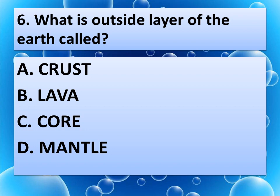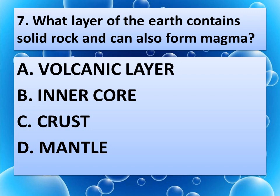What is the outside layer of the earth called? What layer of the earth contains solid rock and can also form magma? Option A: Volcanic layer. Option B: Inner core. Option C: Crust. Or option D: Mantle. And the correct answer is Mantle.